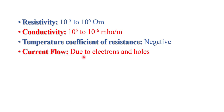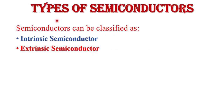Current in a semiconductor flows due to both electrons and holes. Semiconductors can be classified into two types: intrinsic semiconductors and extrinsic semiconductors. In the next video, I will explain the full detail of types of semiconductors — intrinsic and extrinsic — so stay tuned.